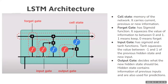After that, we have the input gate, which has a sigmoid function that does the same thing as the forget gate, but it works with the tanh function, which squeezes the value between minus 1 and positive 1 of the previous hidden state and new state — so it either changes the input or keeps it the same. Then we have the output gate, which decides the new hidden state for the next cycle. This is a cycle that repeats itself.